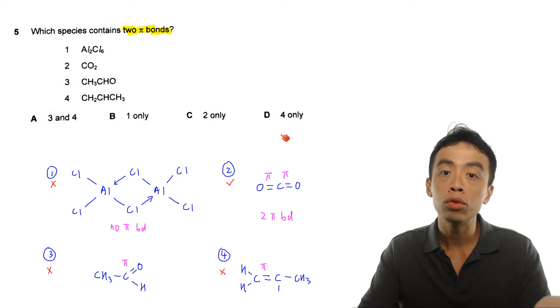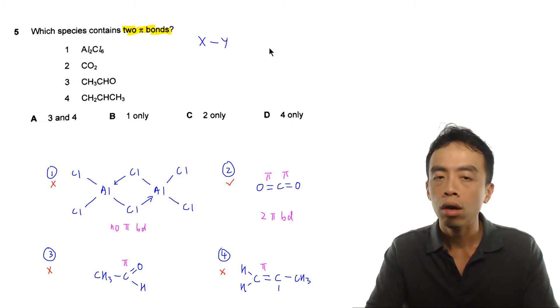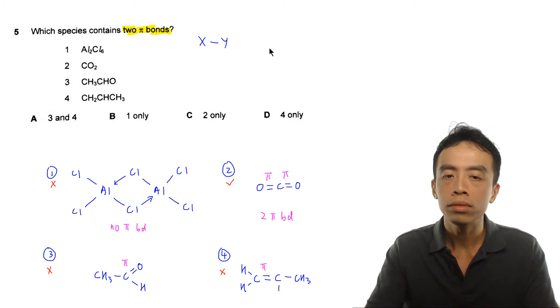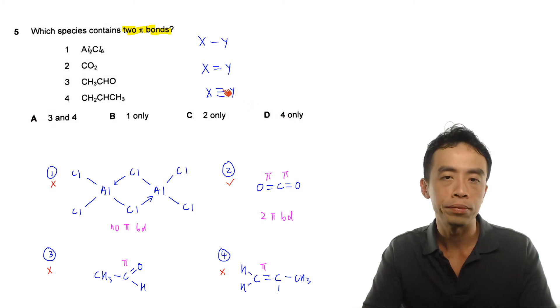Now what we need to know is between any two atoms, X and Y, if it forms a covalent bond between X and Y, then if it is a single bond, it will be a sigma bond; if it is a double bond, it will be one sigma bond, one pi bond; and if it is a triple bond, then it will be one sigma and two pi bonds. So maybe let me write this down. If I have X bonded to Y, of course it can also be X bonded to X, or Y bonded to Y, but this is general. So we will have in general these three different permutations in terms of the number of covalent bonds we can have between two atoms.